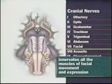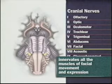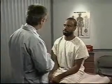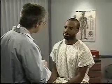Cranial nerve 7, the facial nerve, innervates all the muscles of facial movement and expression. It also mediates taste sensation in the anterior two-thirds of the tongue. To assess this nerve, inspect the patient's face at rest and during conversation. Note any asymmetry and look for ticks or other involuntary movements. Next, ask the patient to raise his eyebrows, frown, close his eyes tightly, show his teeth, smile, and puff out his cheeks. Normally, the patient can do these maneuvers easily and symmetrically.